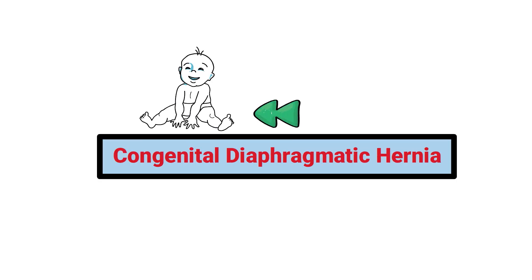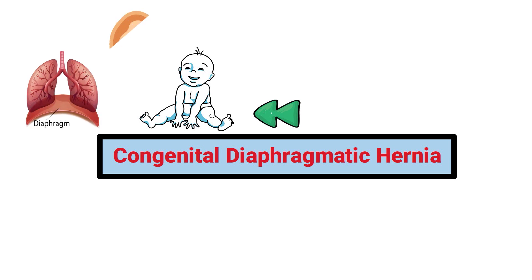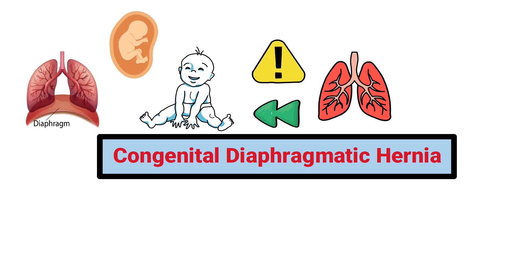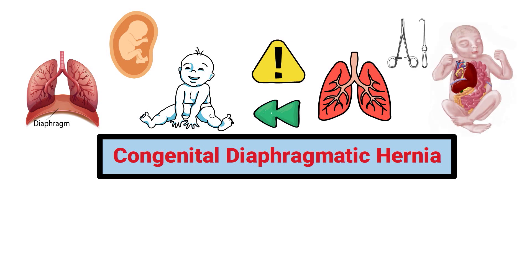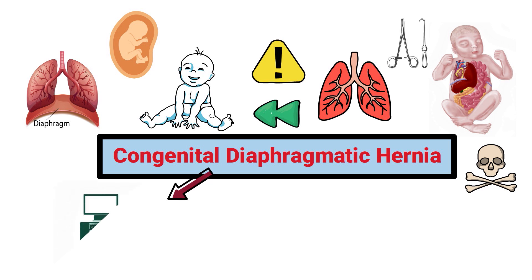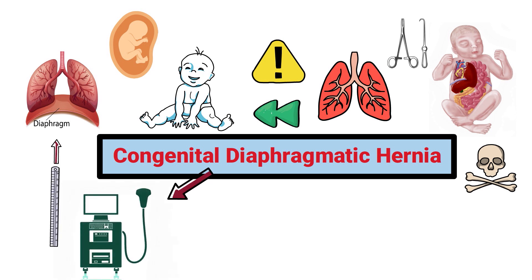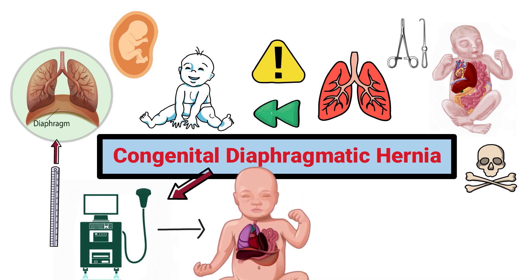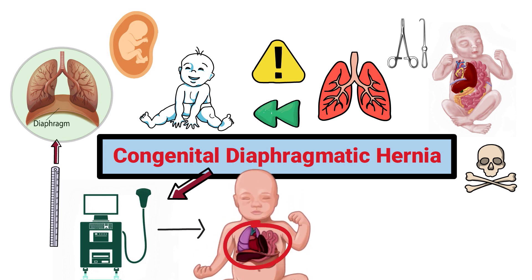A congenital diaphragmatic hernia occurs in newborns when the diaphragm does not close completely during prenatal development. It results in severe respiratory distress and requires immediate surgical repair, otherwise the opening can allow contents from the stomach to move into the chest cavity, which can be life-threatening. It can be detected with an ultrasound by measuring the size of the lungs, which would also show if stomach contents have moved into the chest cavity.